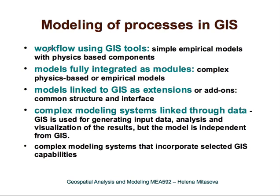How is modeling of processes linked to GIS? Simple empirical models can usually be run directly using GIS tools — you use standard GIS tools to prepare input data and write the model equations in map algebra, then visualize results using GIS tools. There are also models fully integrated within GIS as specific modules; for example, solar radiation models, which we have already worked with, are implemented as dynamic and spatially distributed models.